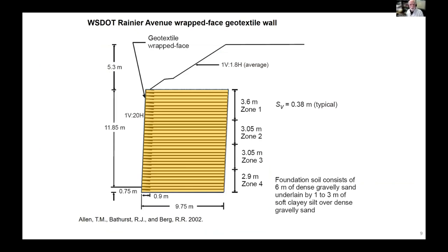Here's a cross section that gives you a sense of the size of the structure. After it was constructed, a surcharge was put on top of it, and in fact the entire soil mass was part of a preload. Here's a cross section where we had to pre-compress some soils at the location of a highway overpass being constructed at the Rainier Avenue location in Seattle. This wall was heavily instrumented, and we learned many things about the mechanical behavior of this particular wall.